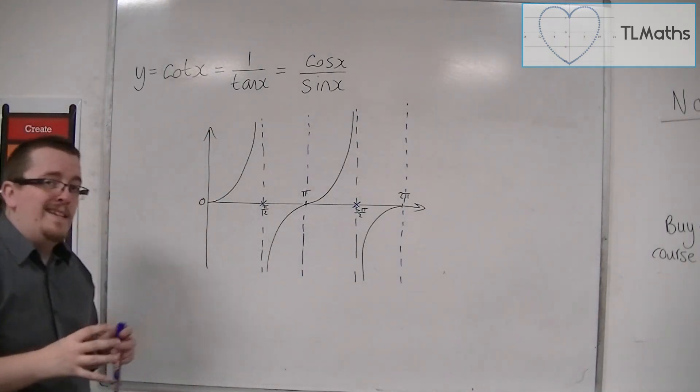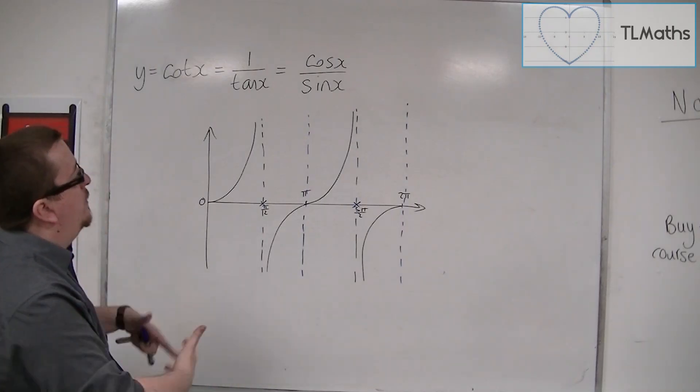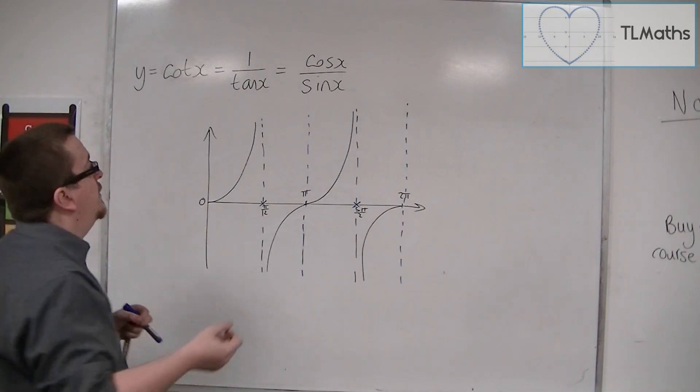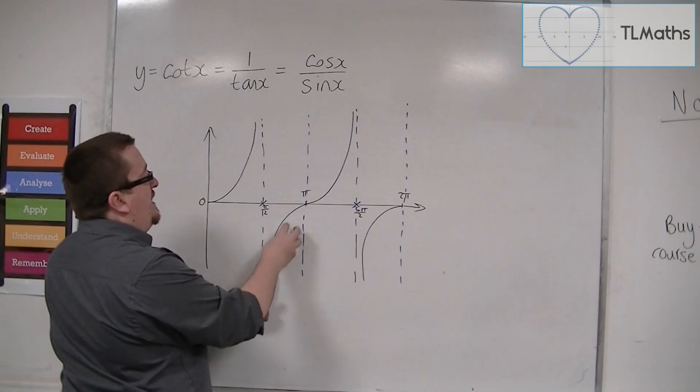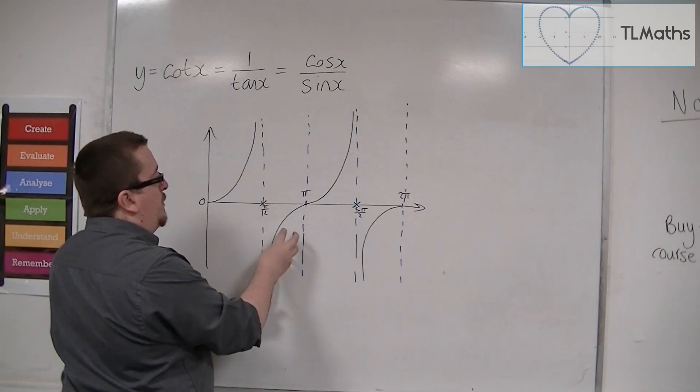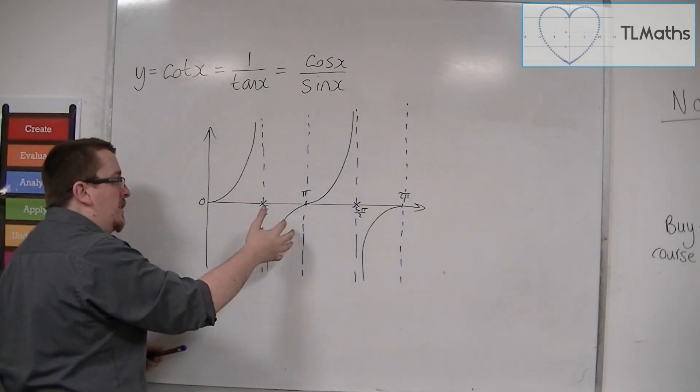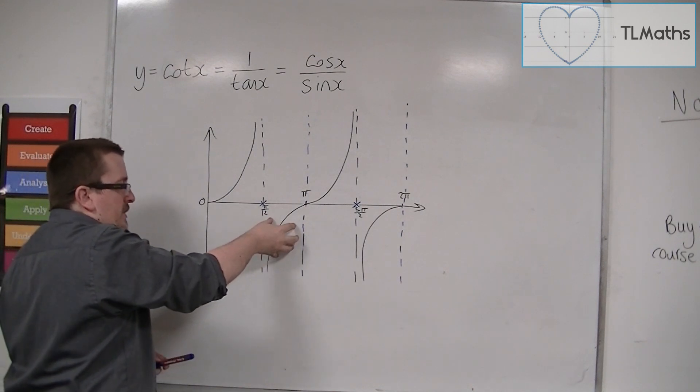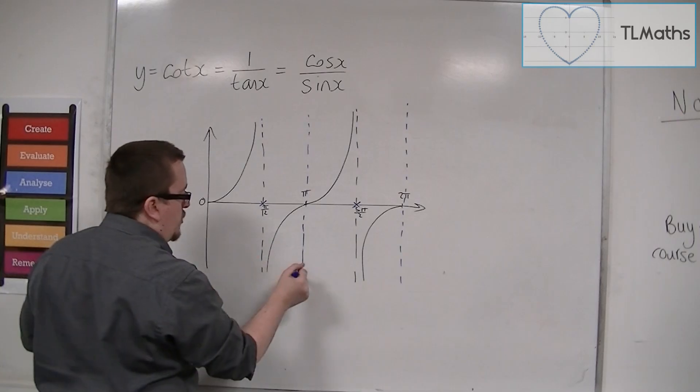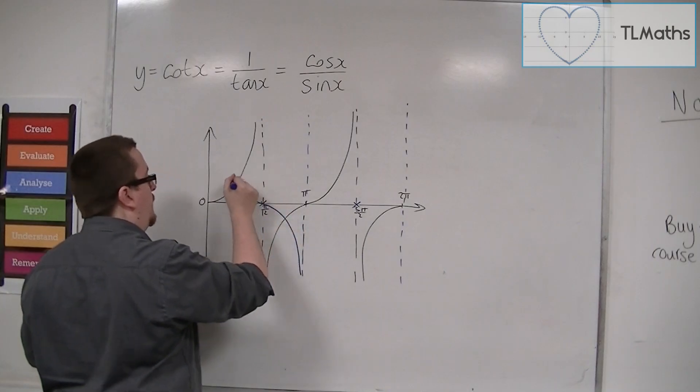Now one way to determine which is to look at its positive and negative aspects. So over here, tan is negative between π over 2 and π. 1 over a negative number is a negative number, and so the curve must be in this section between π over 2 and π. And so that restricts me to saying, well, the curve must do something like this then.